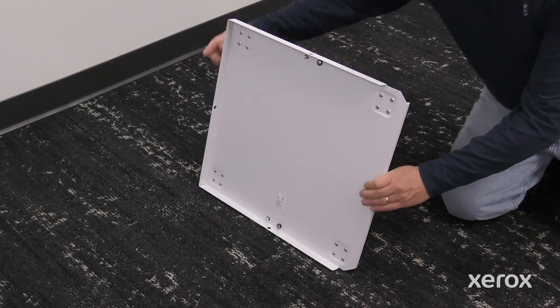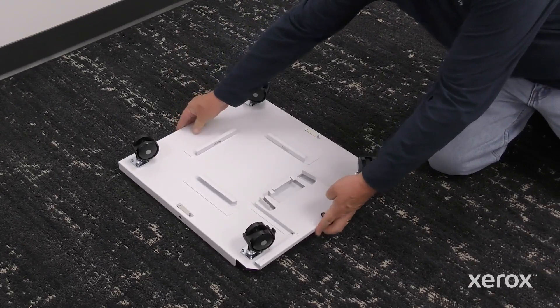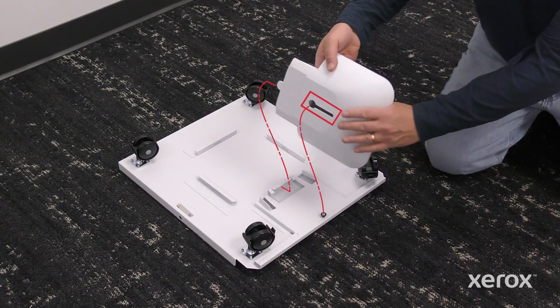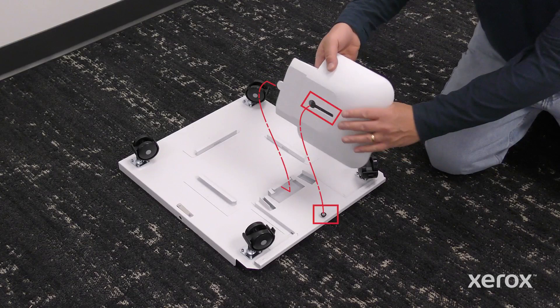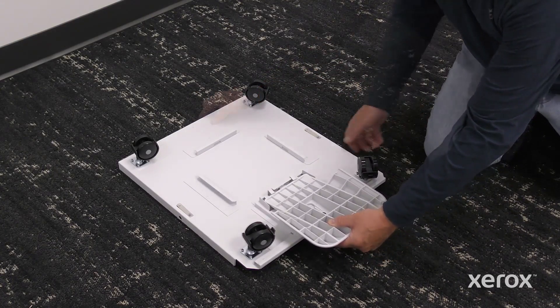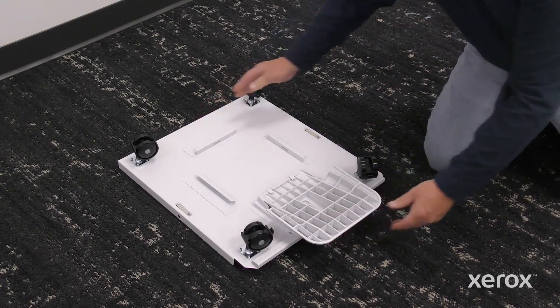To install the support base, turn the printer's stand base over. Align the hole on the support base with the post on the stand base. Slide the support towards the center of the stand until the tabs click into the slots.